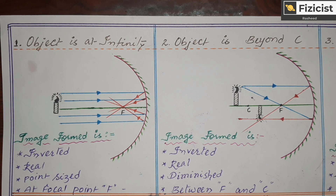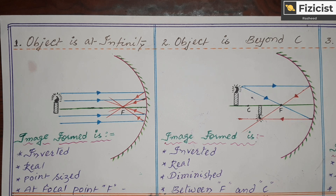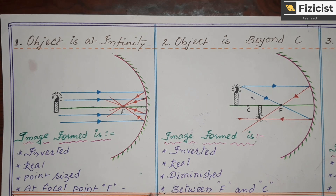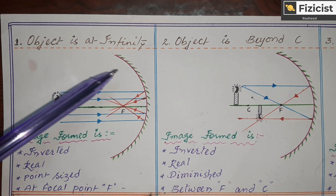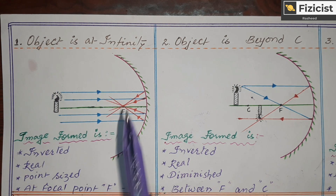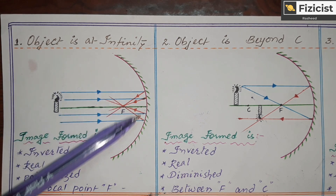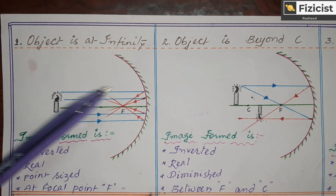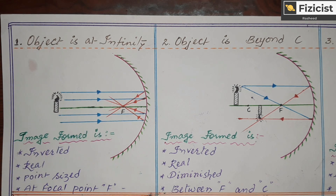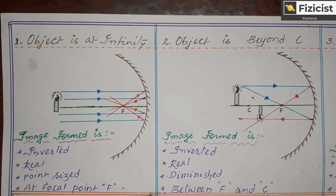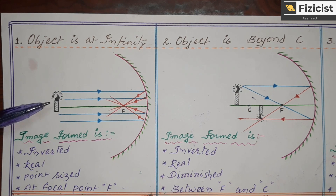Here we go with the first position: the object is at infinity, meaning the object is kept at infinite distance from the concave mirror. One thing to keep in mind is that this concave mirror is bulging inward — the bulging outward surface is coated and the bulging inward surface is used for reflection, so light reflects from the inward surface.